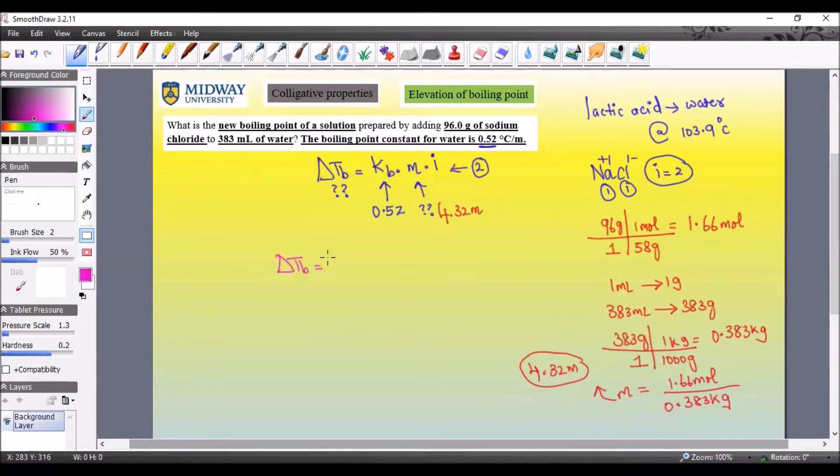Now let's go ahead and solve the calculation. It's just asking for the elevation of boiling point, which is 0.52 times 4.32 times 2. Let's solve that: times 2, times 0.52, 4.49 degrees Celsius.